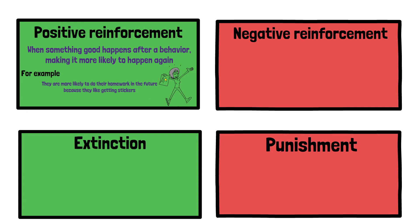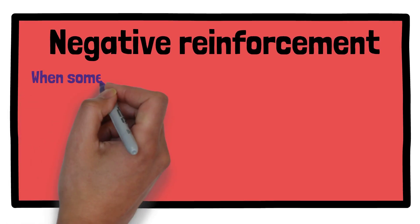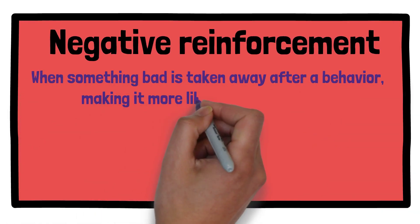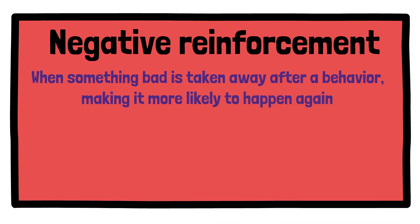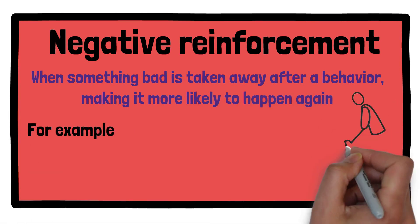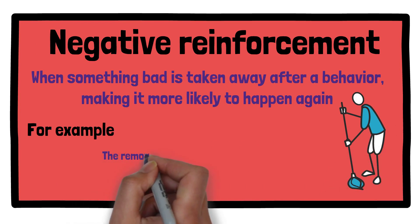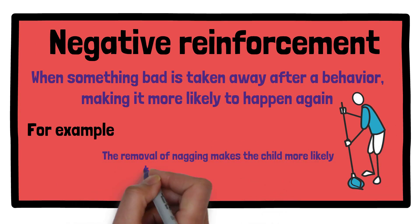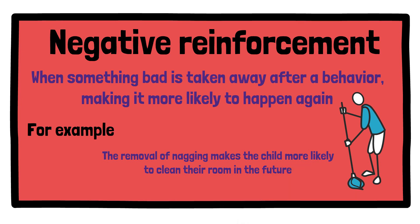Negative reinforcement is when something bad is taken away after a behavior, making it more likely to happen again. For instance, if a child cleans their room to stop their parent from nagging, the removal of nagging makes the child more likely to clean their room in the future.